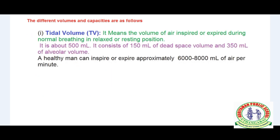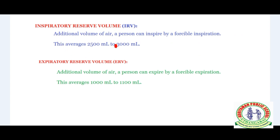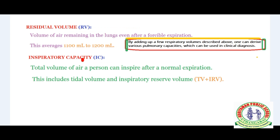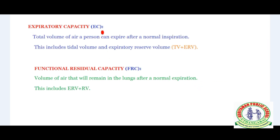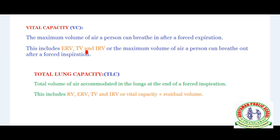To summarize: tidal volume is about 500 ml, and a healthy man inspires or expires approximately 6000 to 8000 ml per minute. Inspiratory reserve volume (IRV) is 2500–3000 ml. Expiratory reserve volume (ERV) is the next volume. Inspiratory capacity is the total volume of air a person can inspire after normal expiration: TV plus IRV. Expiratory capacity is TV plus ERV. Functional residual capacity is ERV plus RV. Vital capacity includes ERV, TV, and IRV.